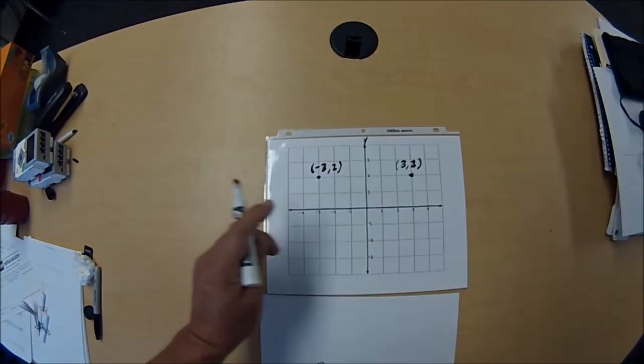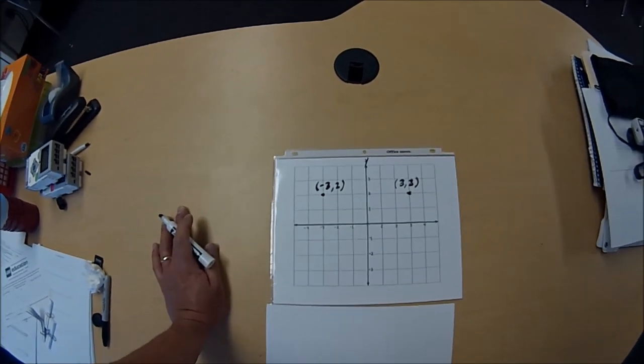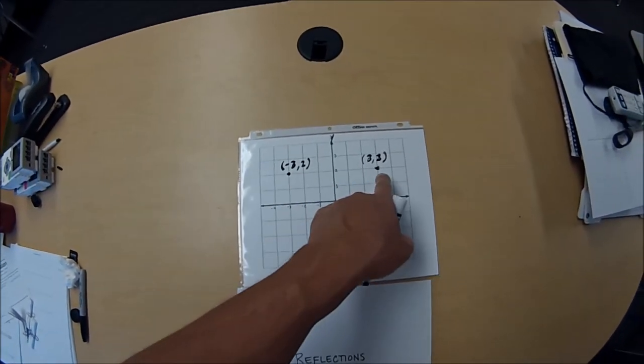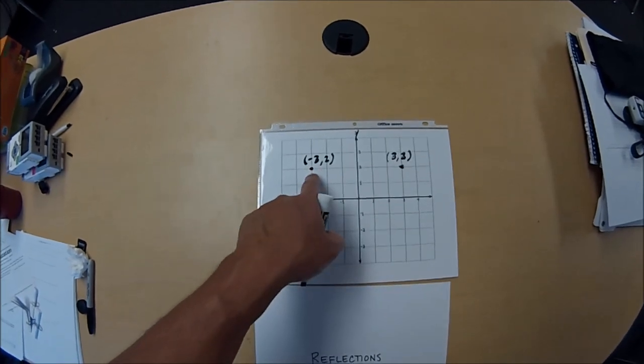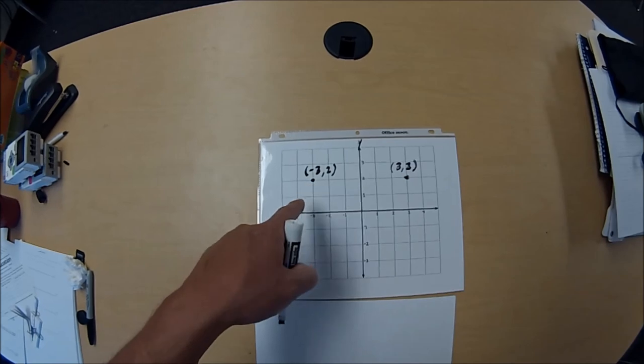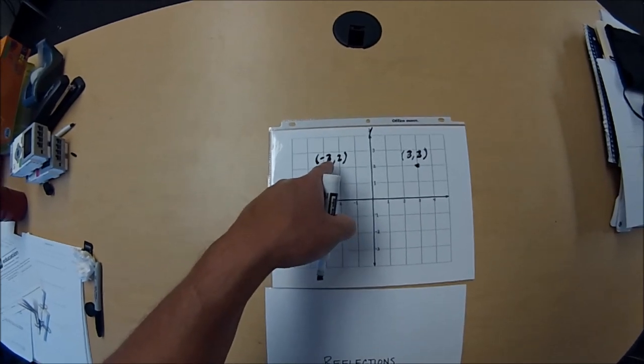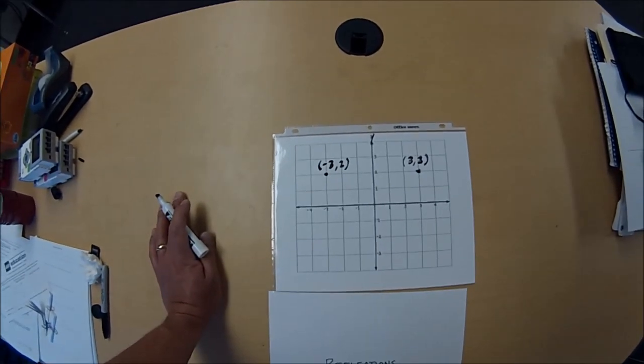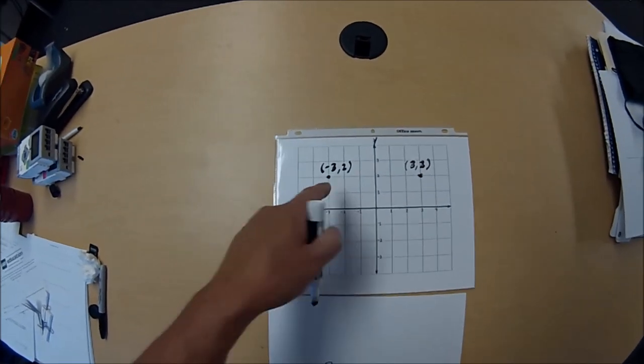Then students can also figure out from this pattern that if we reflect a point over the y-axis, they can just look and go, oh, the first number in the ordered pair basically changes signs from positive to negative.